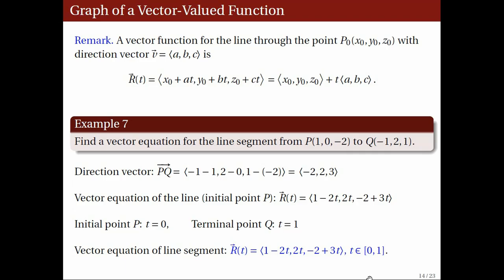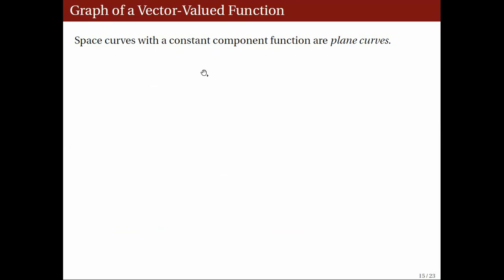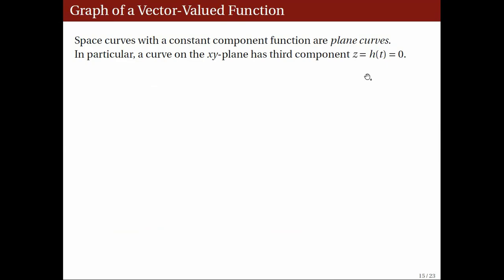First, we consider what happens when one of the components of a vector function is the zero function or some other constant function. In that case, the space curve is just going to lie on a plane. For example, if the k-hat component of a vector function is zero, then its graph just lies on the xy-plane.